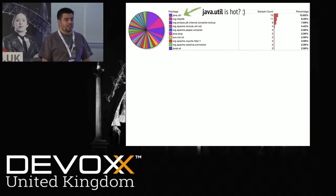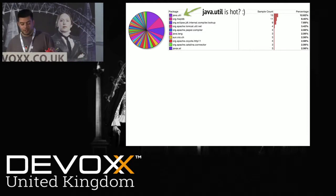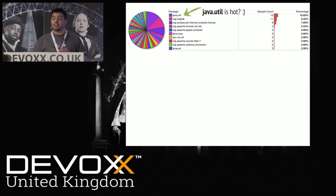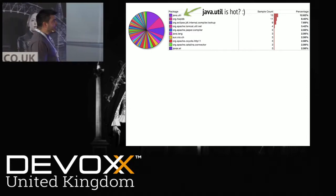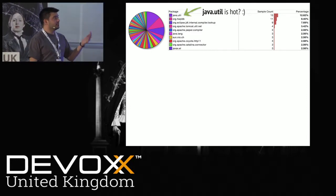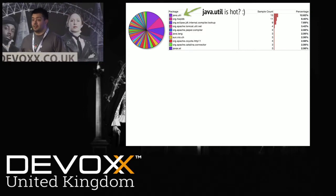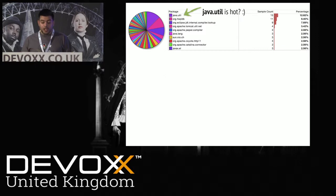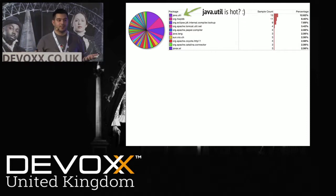This is Java Mission Control. Very often you get two different views of profilers — which is one of the reasons why we introduced XRebel. The two views are: you get very little information, or you get loads and loads of information. Here we have very little — it's by package, and we can see Java Util is hot. But I wouldn't call myself a performance expert — I'm going to know Java Util is going to be hot; everyone uses Java Util.